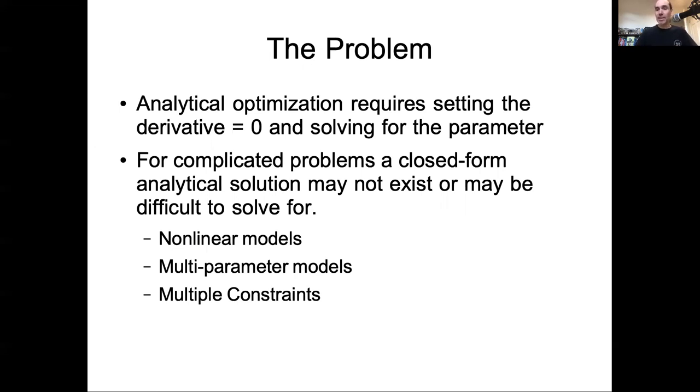So if you had a model with hundreds of equations, which happens in environmental sciences, it would be really hard to solve for this analytically. So this happens when you have nonlinear models, when you have models with more and more parameters, and then models with more and more constraints, so if I have more than one type of data constraining a model.